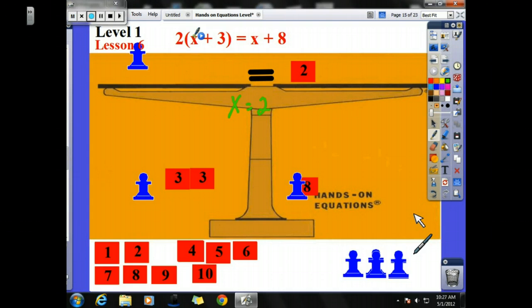And now we go and check our work. I plug in a 2 here and a 2 here. And now I use order of operations, I use PEMDAS. 2 plus 3 is 5, and 5 times 2 is 10. And 2 plus 8 is 10.